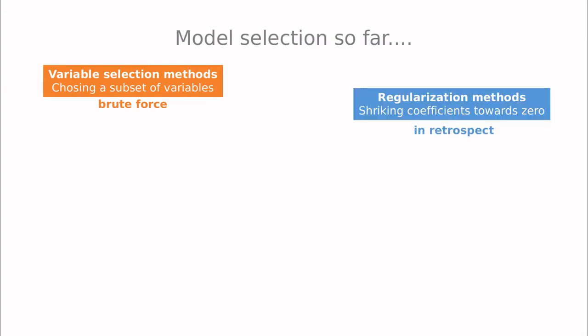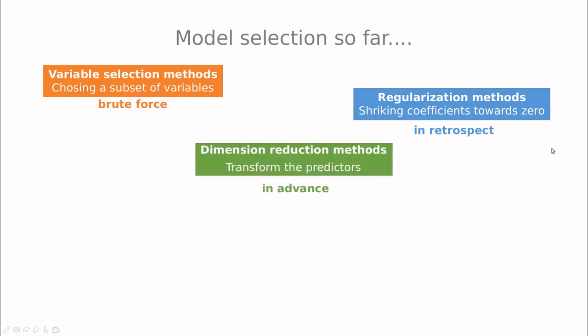The second type of models we've discussed are those I call models in retrospect, where we use one parameter that allows us to shrink the coefficients naturally, so we have a kind of automatic model selection without using any correlations between the variables.